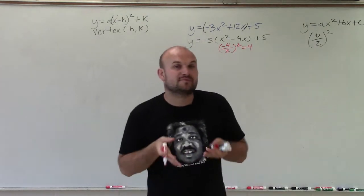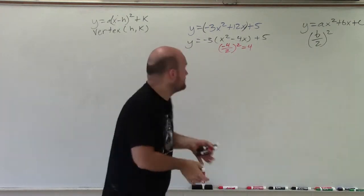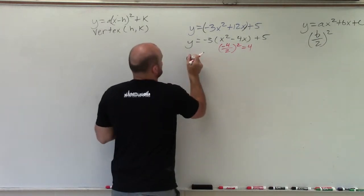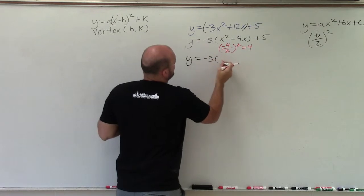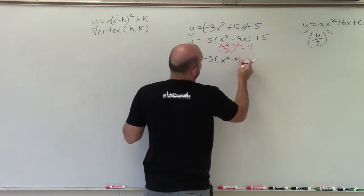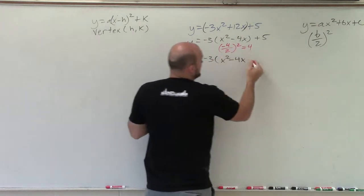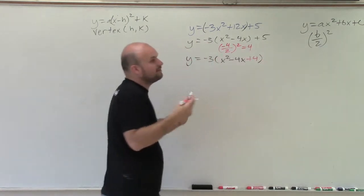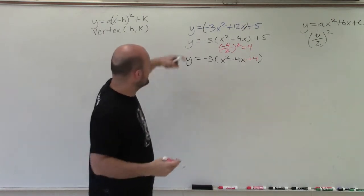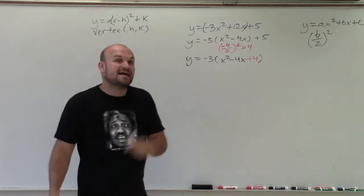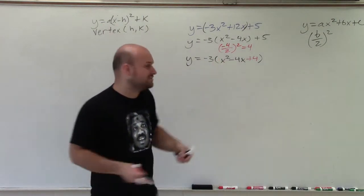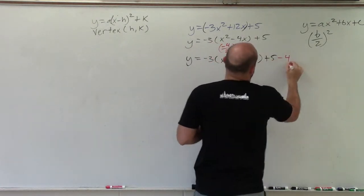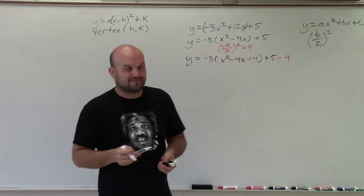So now, I'm going to take that value and add it inside the parentheses. So I have y equals negative 3 times x squared minus 4x. Then I'm going to add 4. Now, remember, this is an equation. So if I add something on one side, I have to add it onto the other side. Or, since we want to solve for y, I could add 4 on one side and subtract 4 on that side. So since I added it, I'm going to have to subtract it.